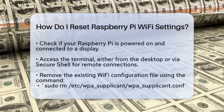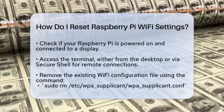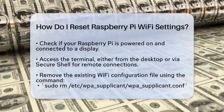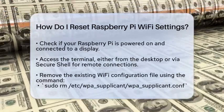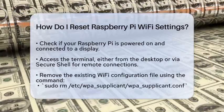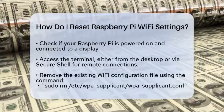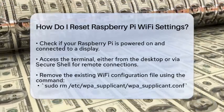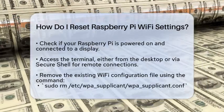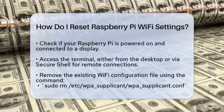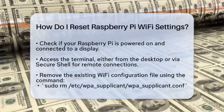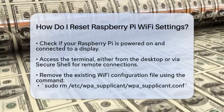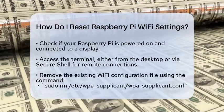First, ensure your Raspberry Pi is powered on and connected to a display. You will need to access the terminal, which is the command line interface for the Raspberry Pi. You can do this by opening the terminal application from the desktop environment or by connecting via SSH if you are using a remote connection.